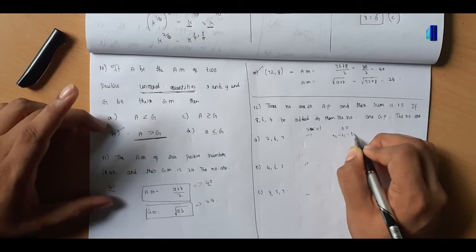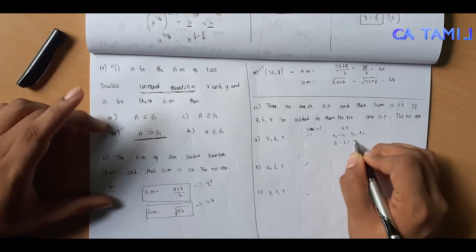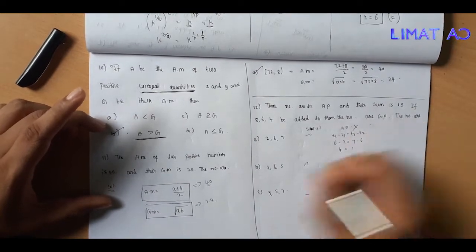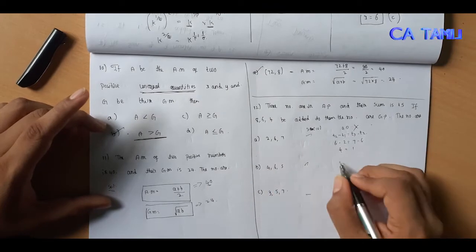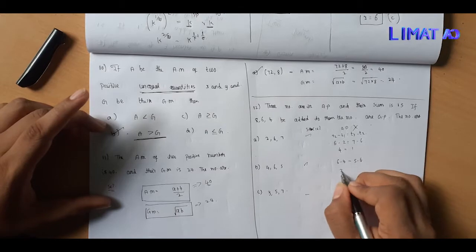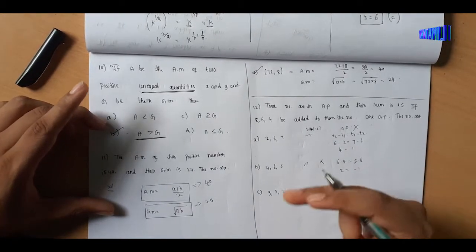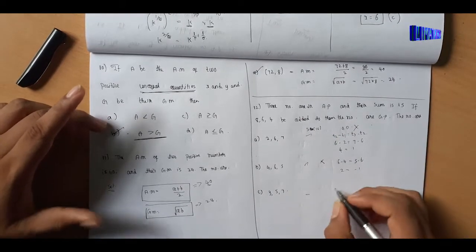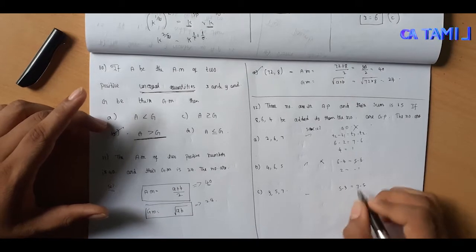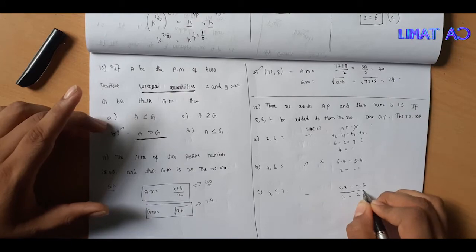To check AP: T2 minus T1 equals T3 minus T2. Checking option C: 5 minus 3 equals 7 minus 5, which gives 2 equals 2. This is AP. So the third option with numbers 3, 5, 7 is correct.